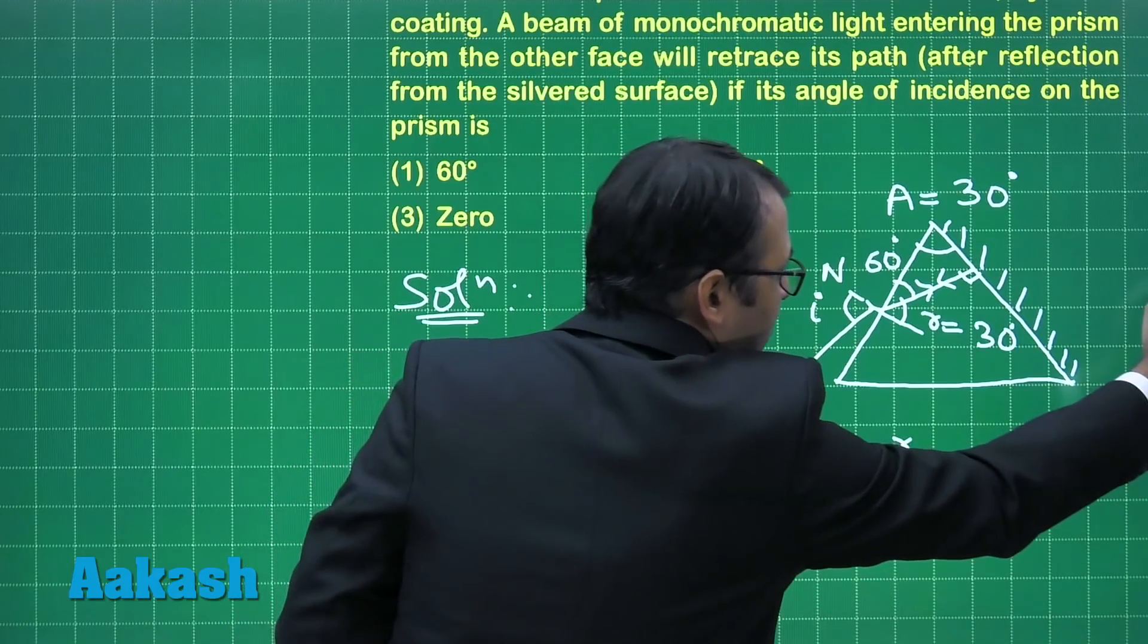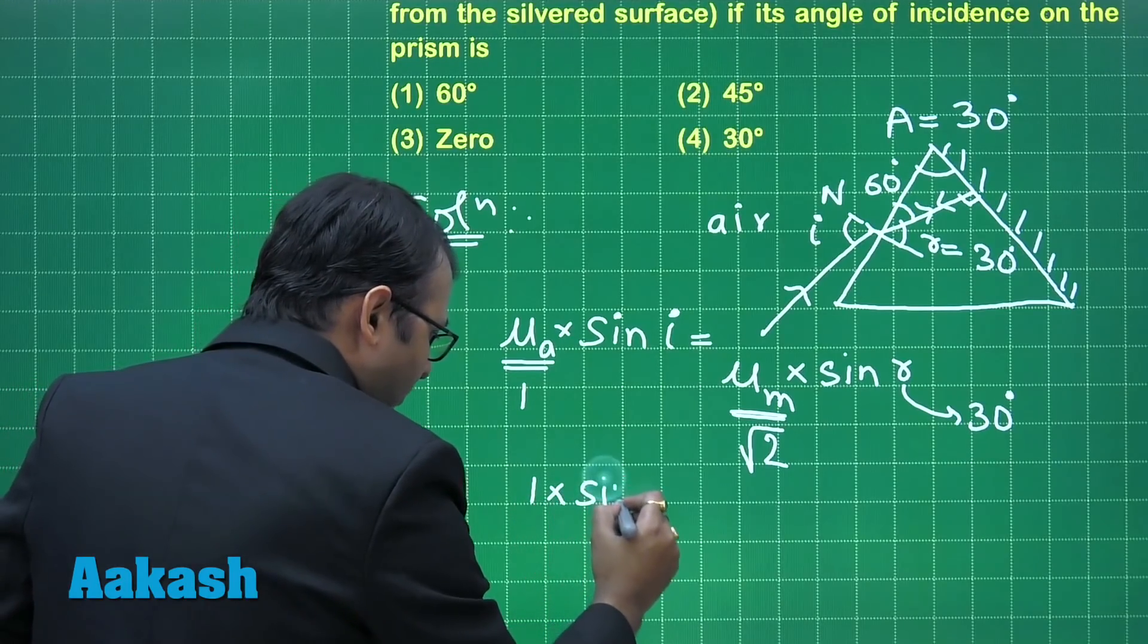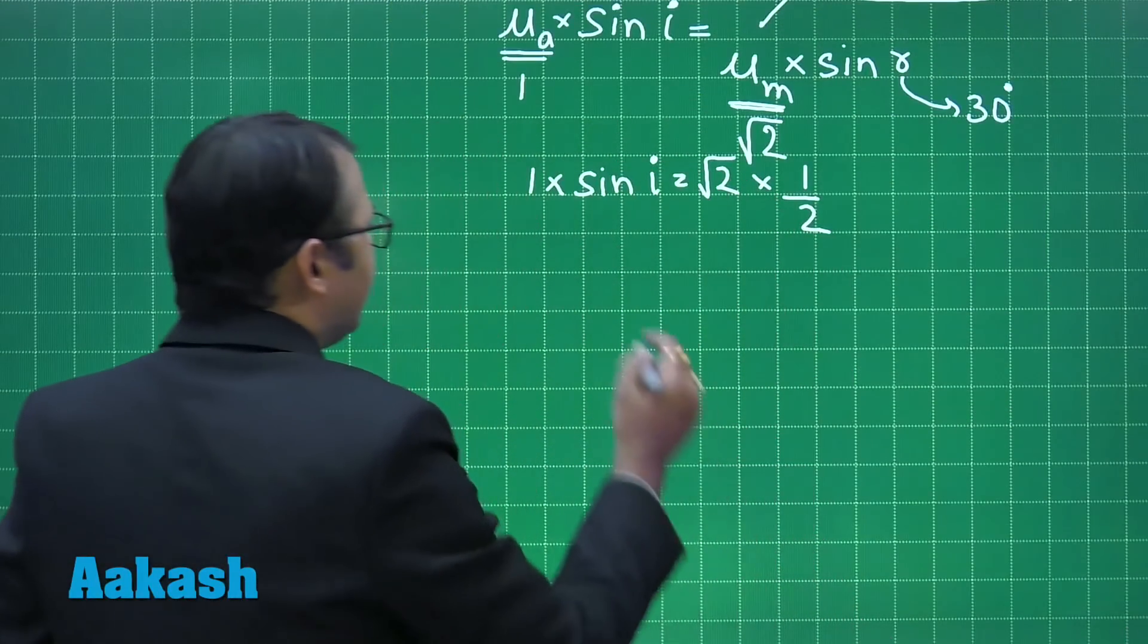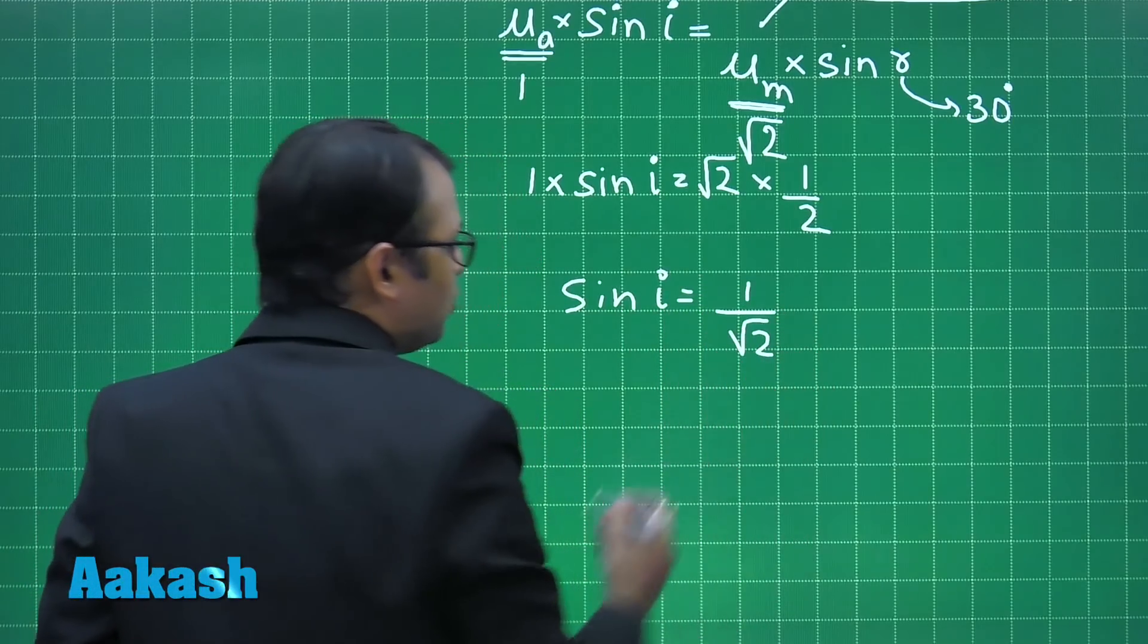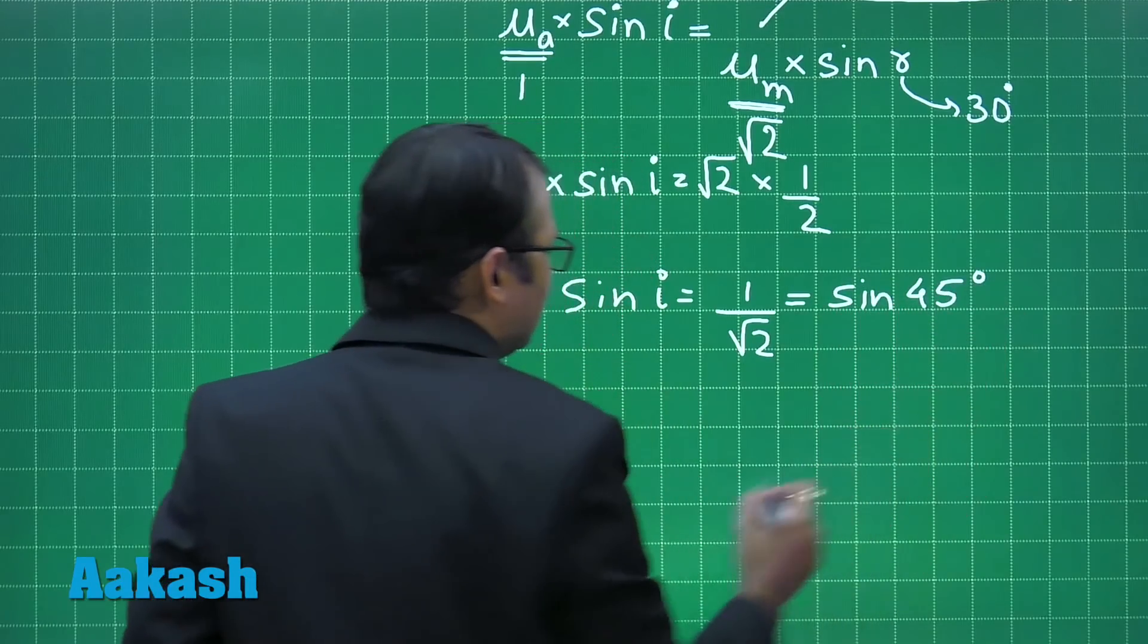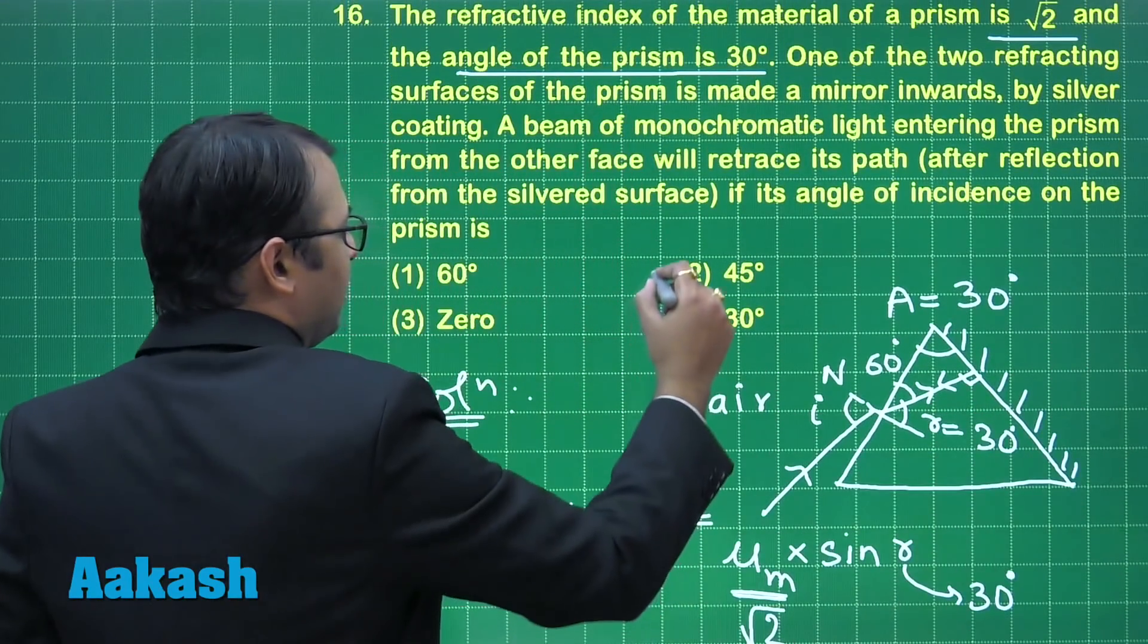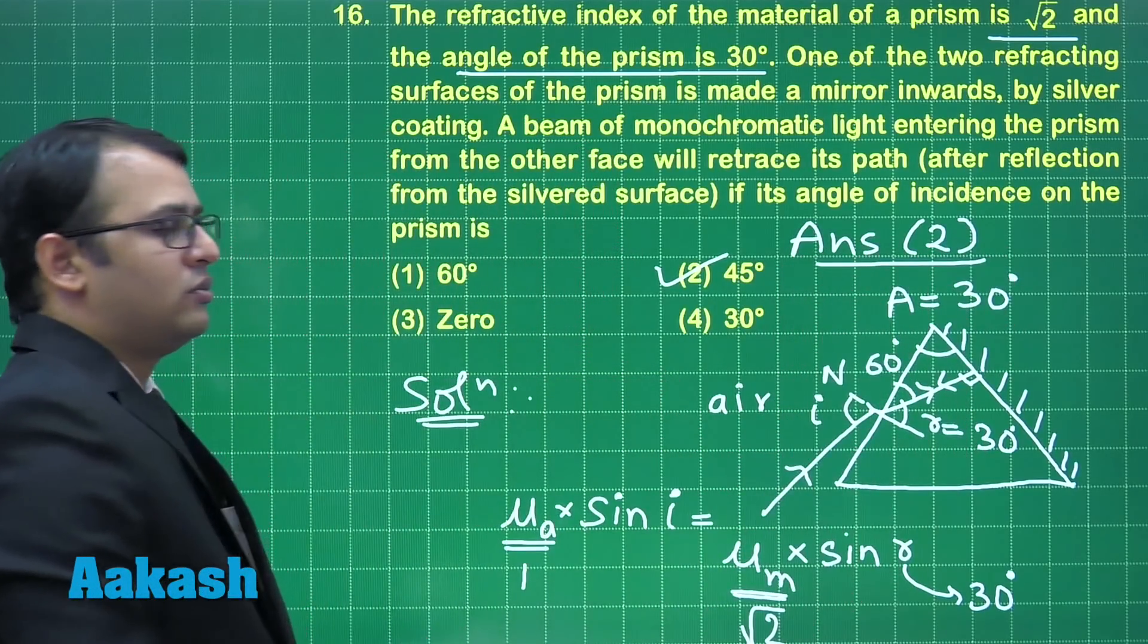So when we put these values here, you will get 1 into sine i equals root 2 into what is the value of sine 30? Half. So solving this we get sine i equals 1 by root 2. Can I say it like this? That this equals basically sine of 45 degrees. So comparing this I will get i equals 45 degrees. So the correct answer is option number 2.